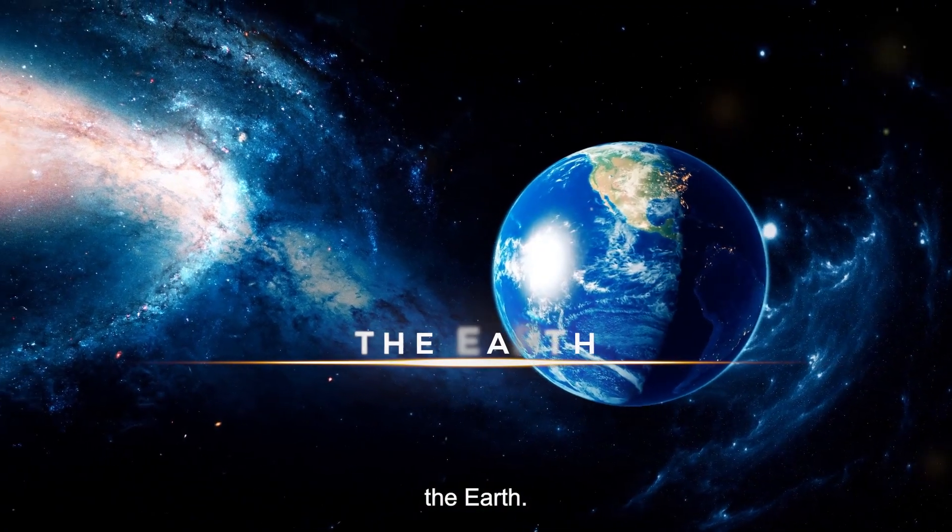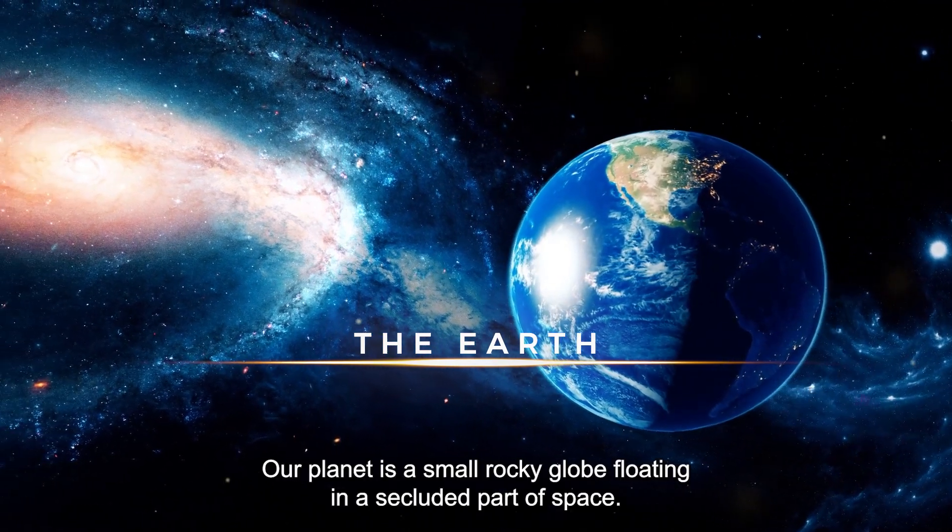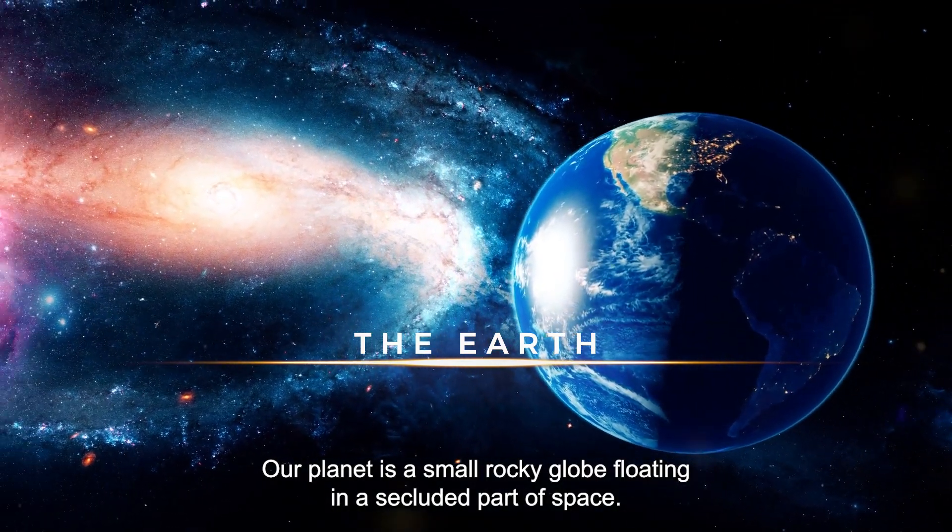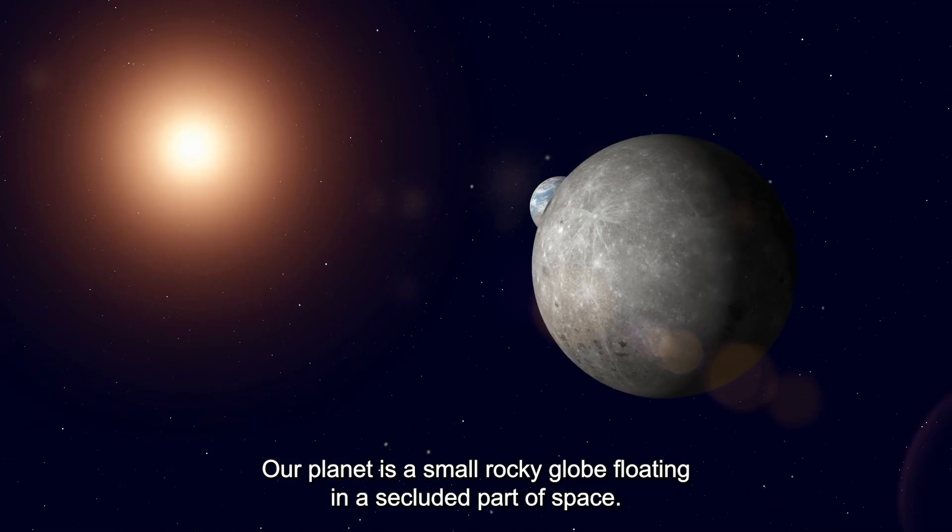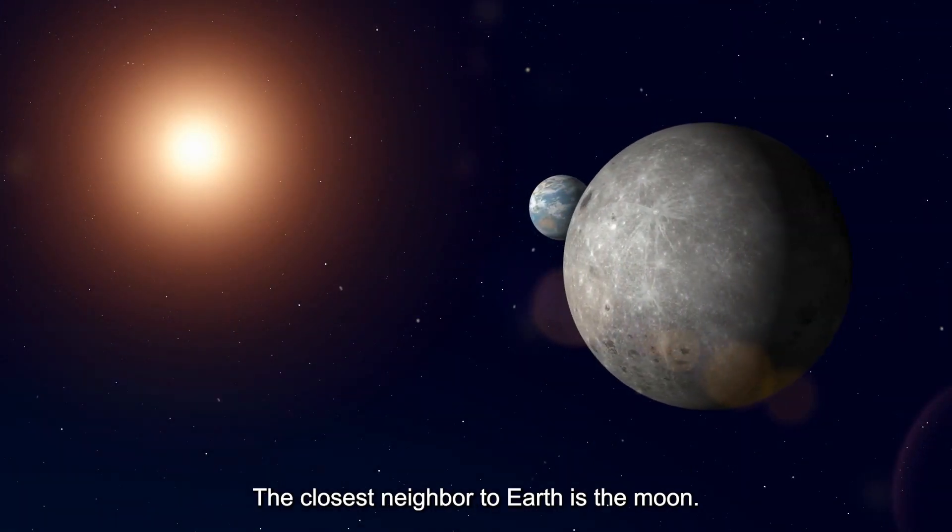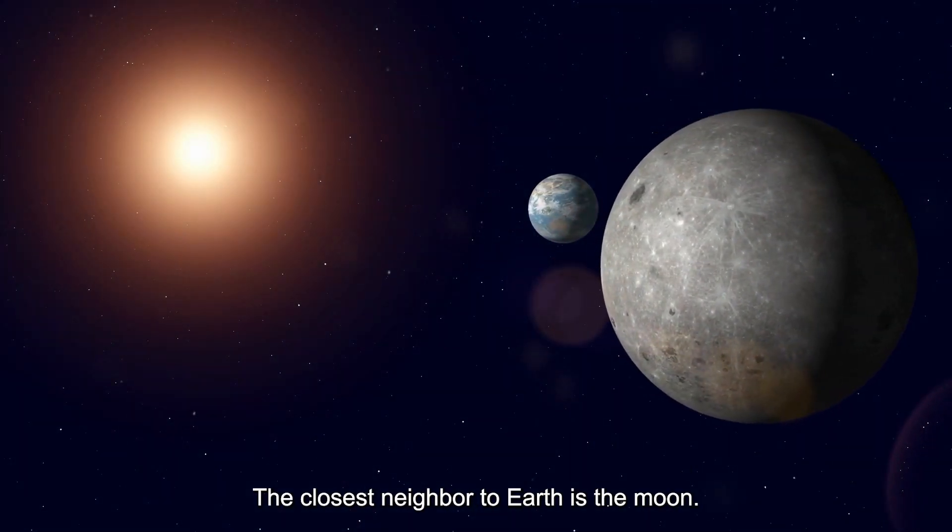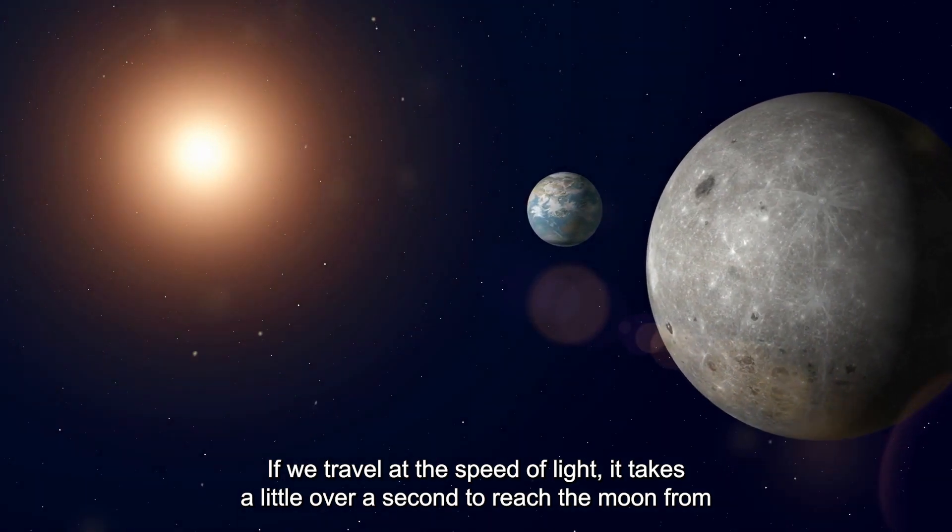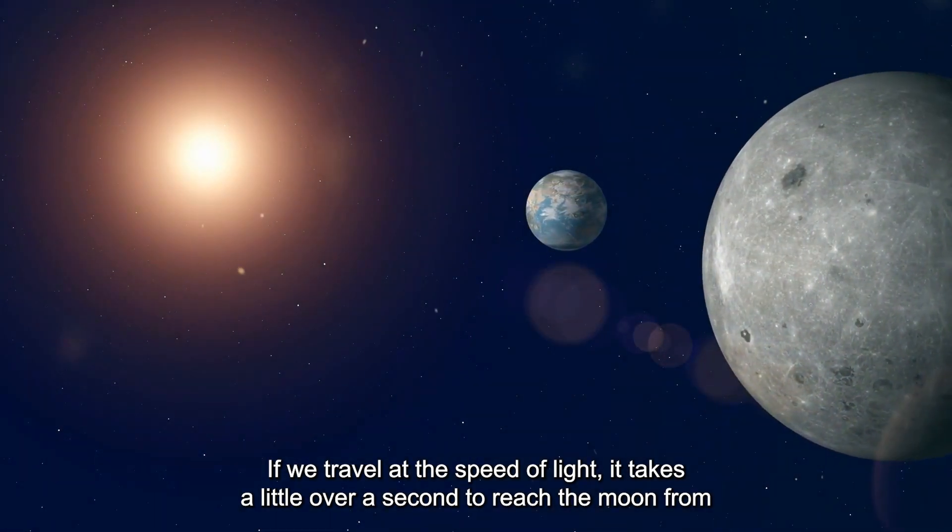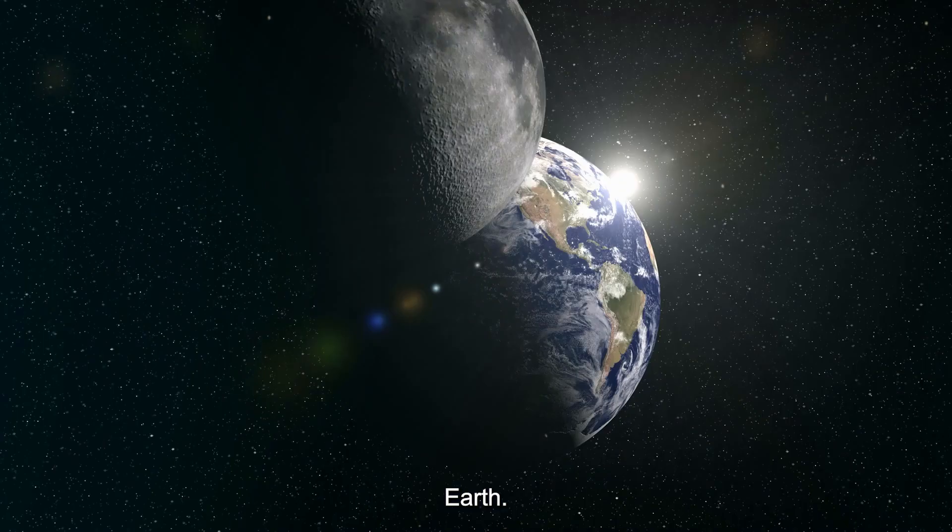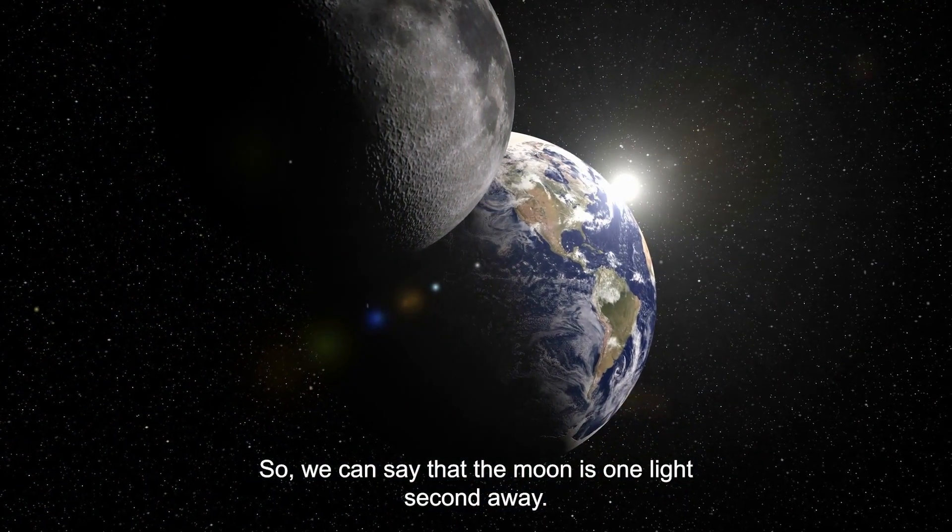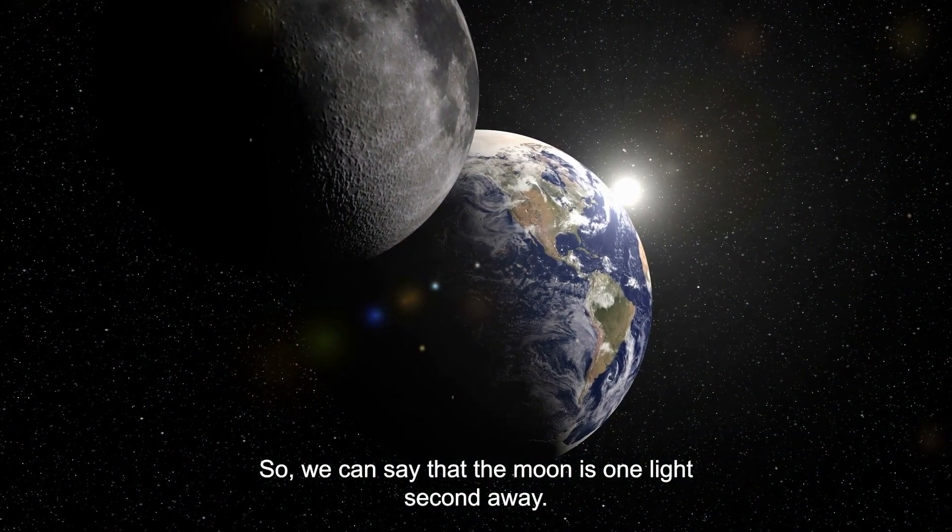The Earth. Our planet is a small rocky globe floating in a secluded part of space. The closest neighbor to Earth is the Moon. If we travel at the speed of light, it takes a little over a second to reach the Moon from Earth. So, we can say that the Moon is one light second away.